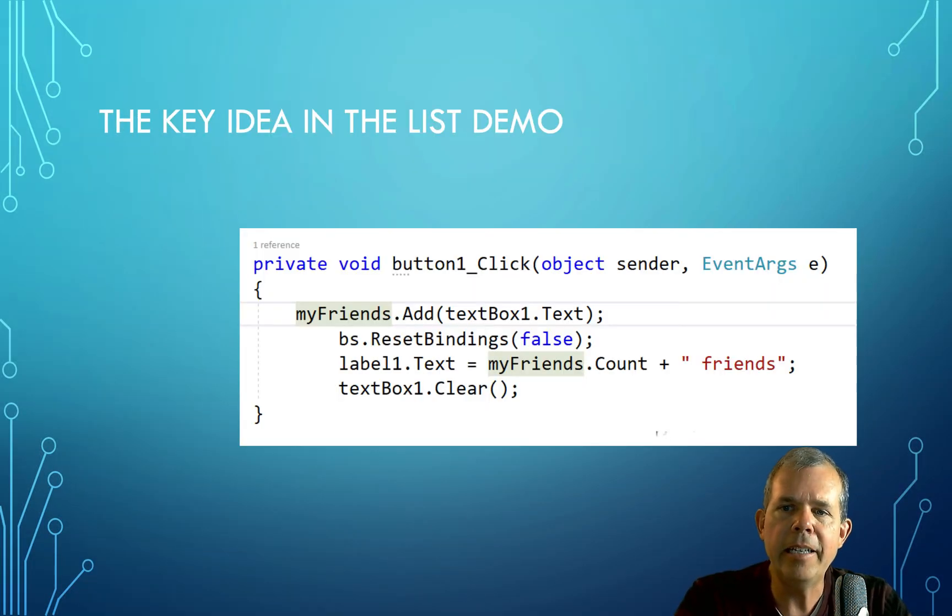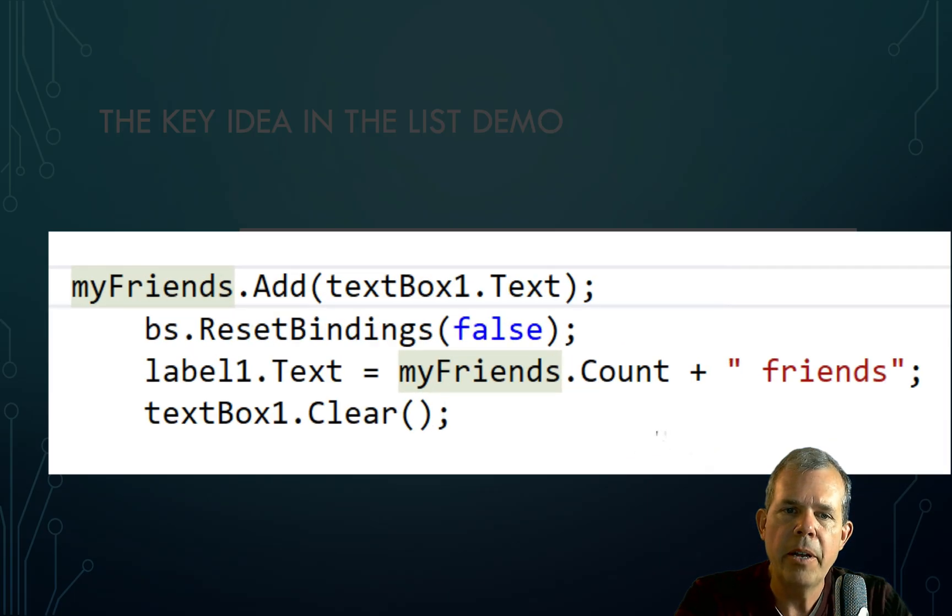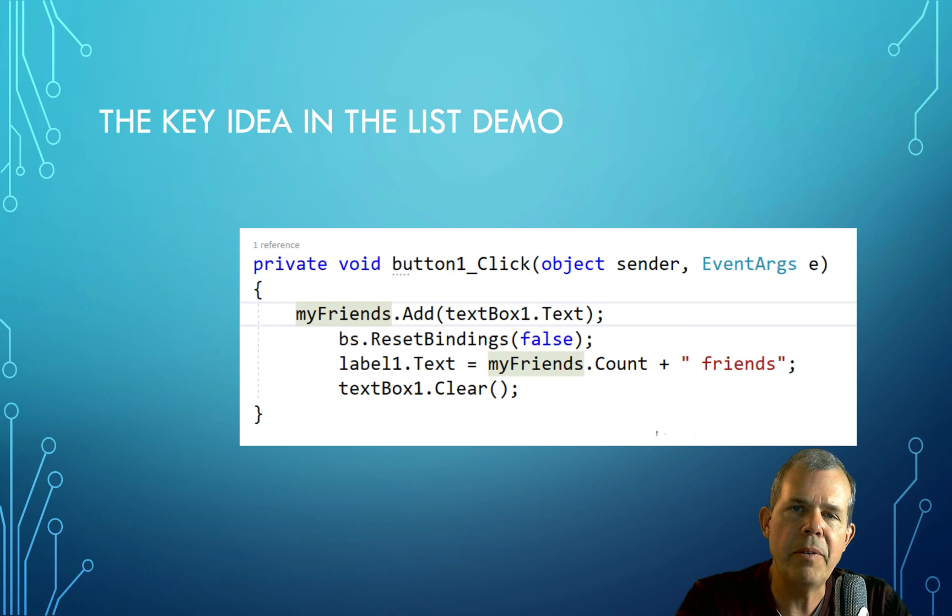So the key idea in this program is going to look like this. We're going to make a list of friends. We're going to have something called a binding source. And then we're going to take a count of the number of friends that we've added to our list. So that'll be the friends list.